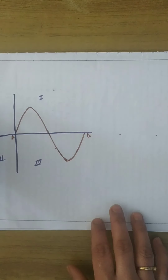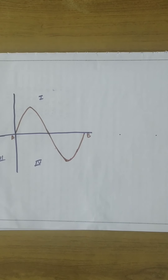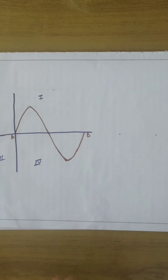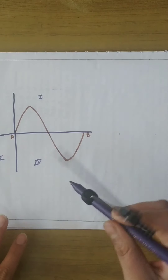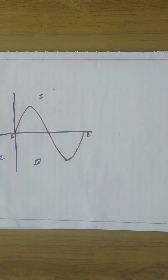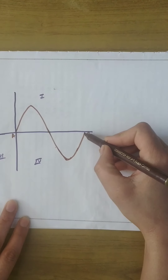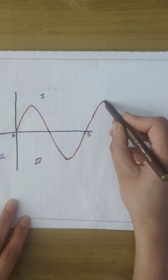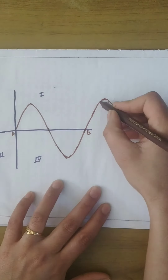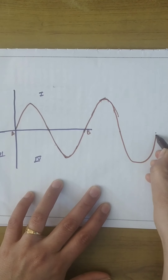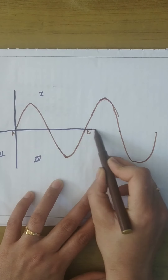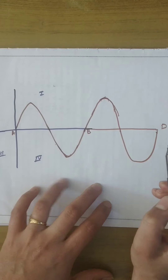Now if we have to study the ocean wave in some detail, we should have a mathematical way to represent the position of every particle. This is one full wave, and if we make another wave, it repeats itself — this is the second wave, from B to D.